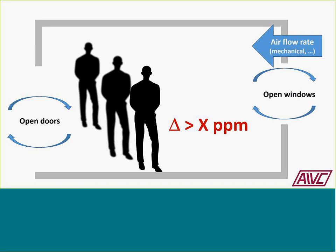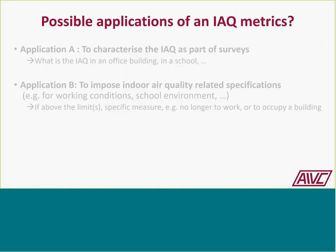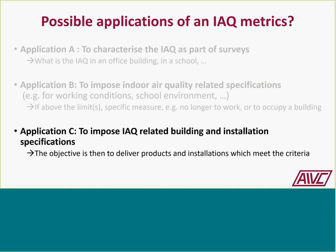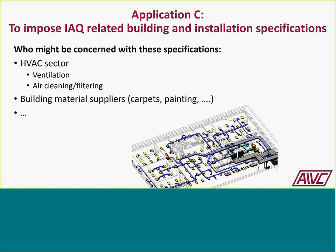If the CO2 increase exceeds the limit value, measures may be required, such as increasing air flow rates or reducing occupancy. Application C is where IAQ metrics are used to impose IAQ-related building and installation specifications—the focus being on delivering products and installations that meet the criteria. IAQ metrics serve as an intermediate step. The HVAC sector, ventilation systems, air cleaning, filtering, and building material suppliers such as carpet and paint manufacturers may all be affected.